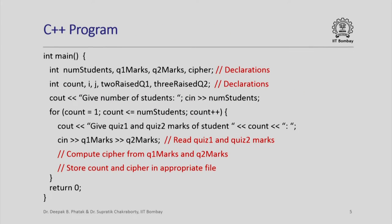Let us look at how a C++ program for this problem might look. Here is the main function — within it we have several integer variables declared. We ask for the number of students, read it into the variable num_students, and then iterate in a for loop for every student. For each student we ask for quiz 1 and quiz 2 marks, read those in, compute the cipher (the encoded form), and store the count and the cipher in an appropriate file.